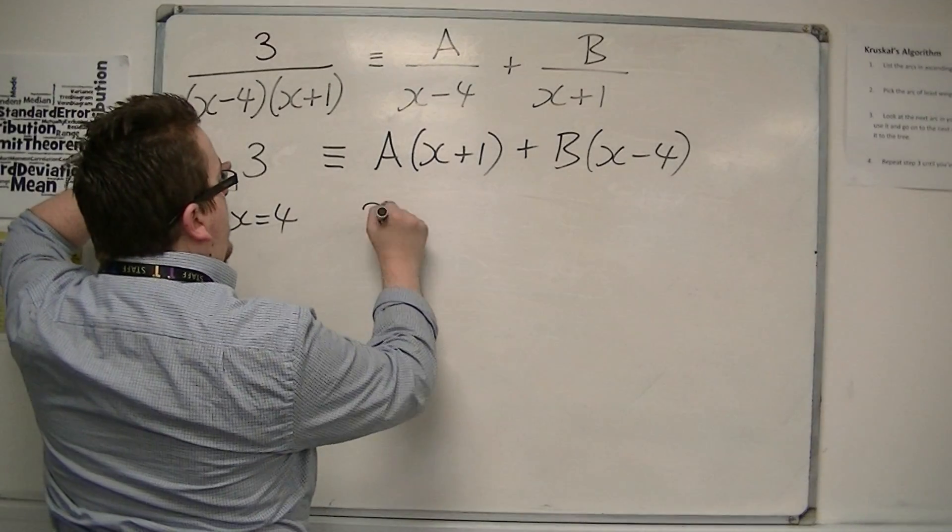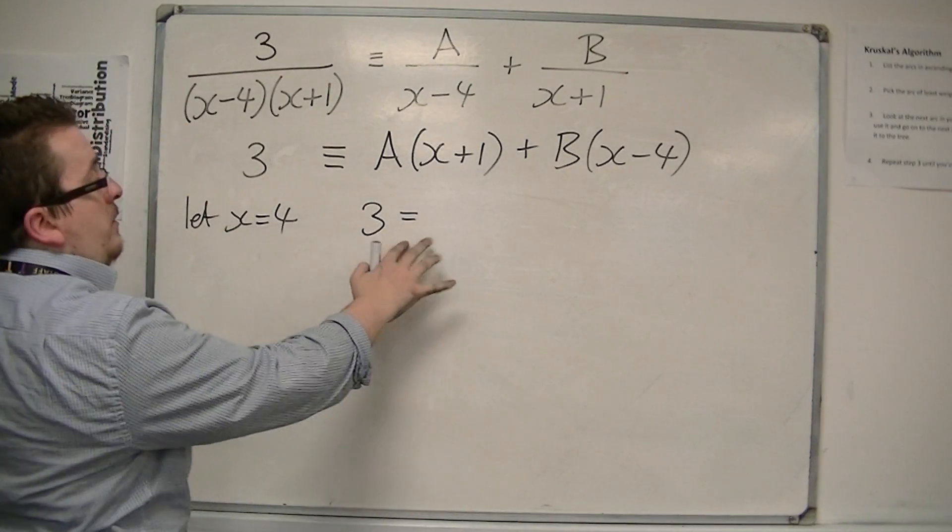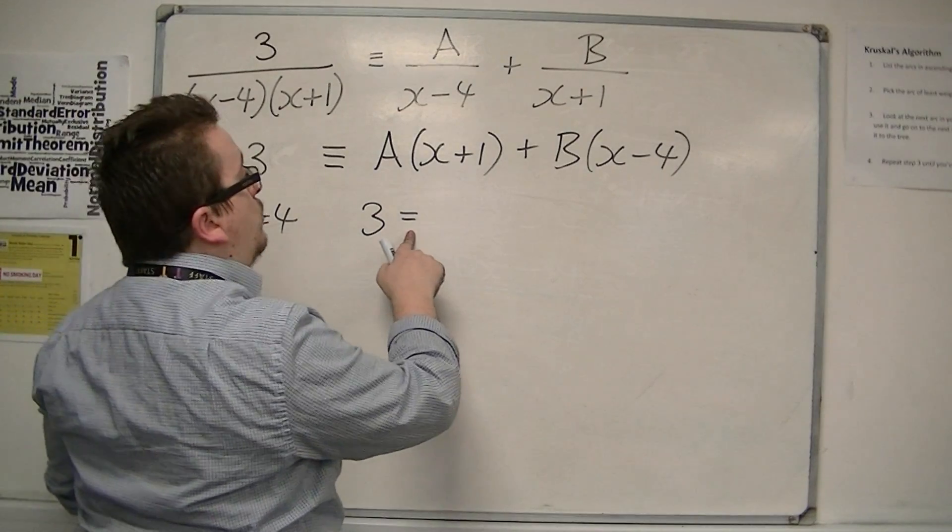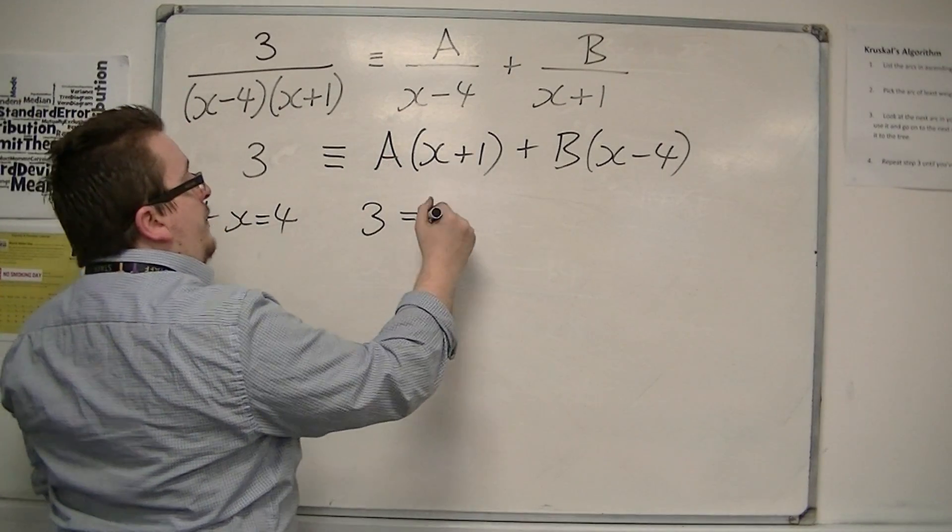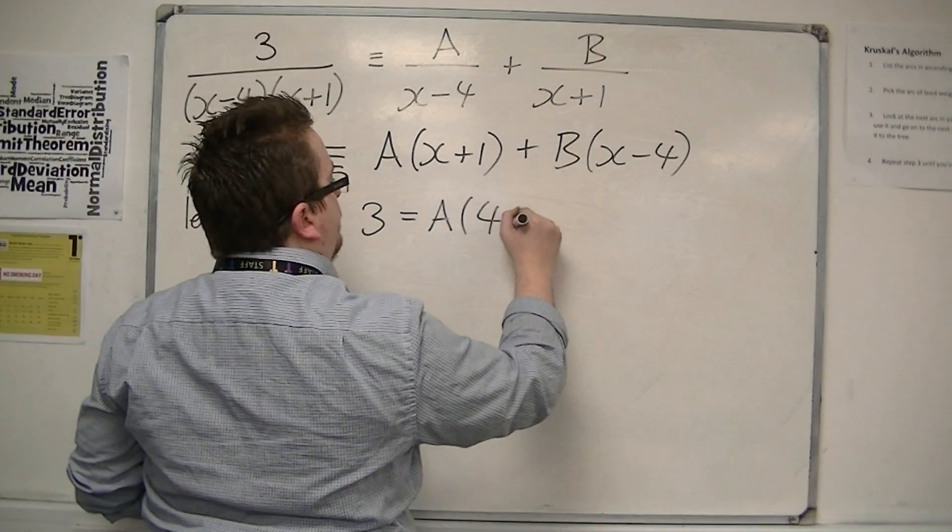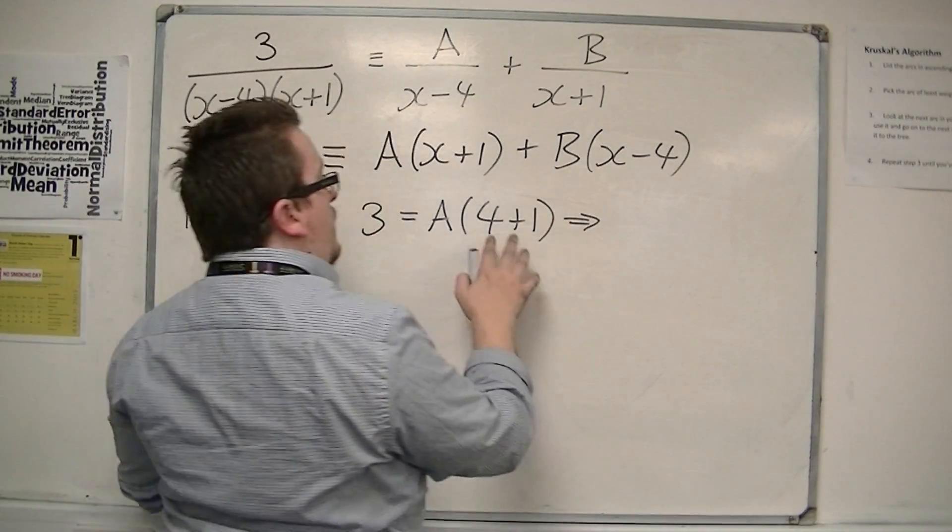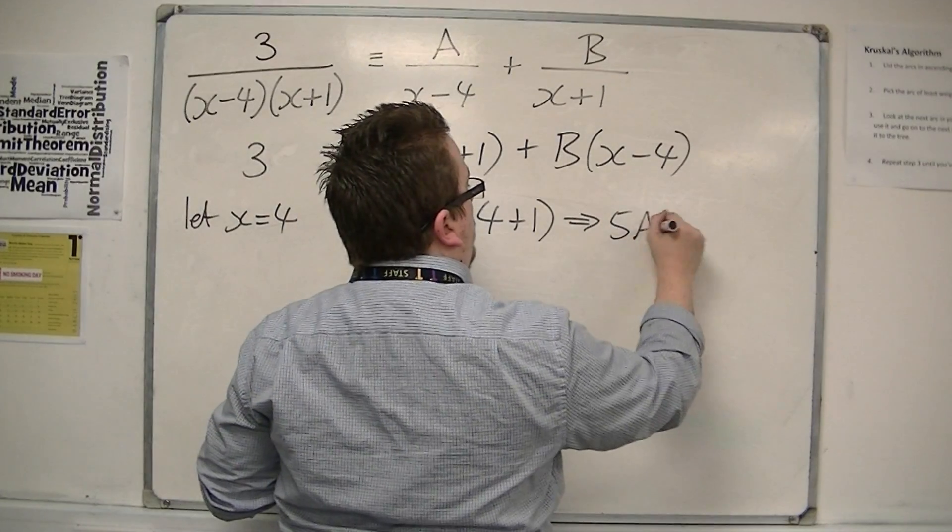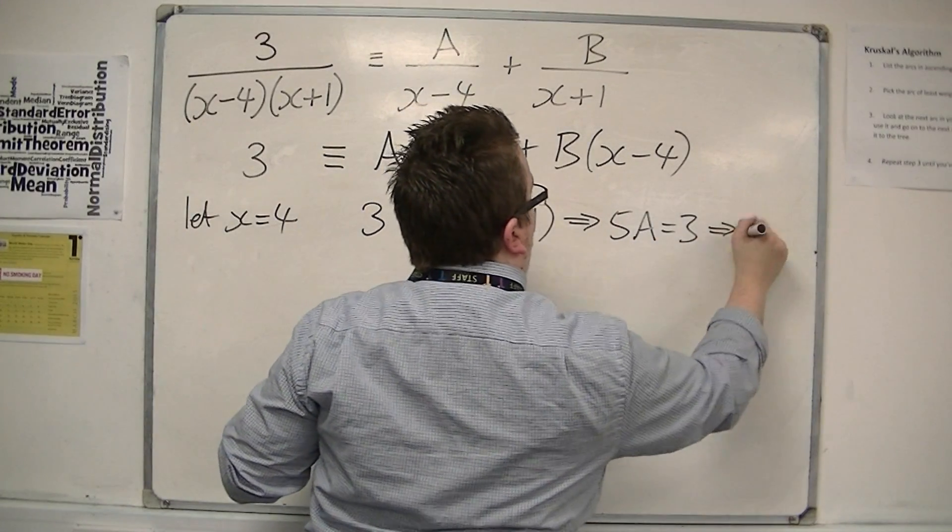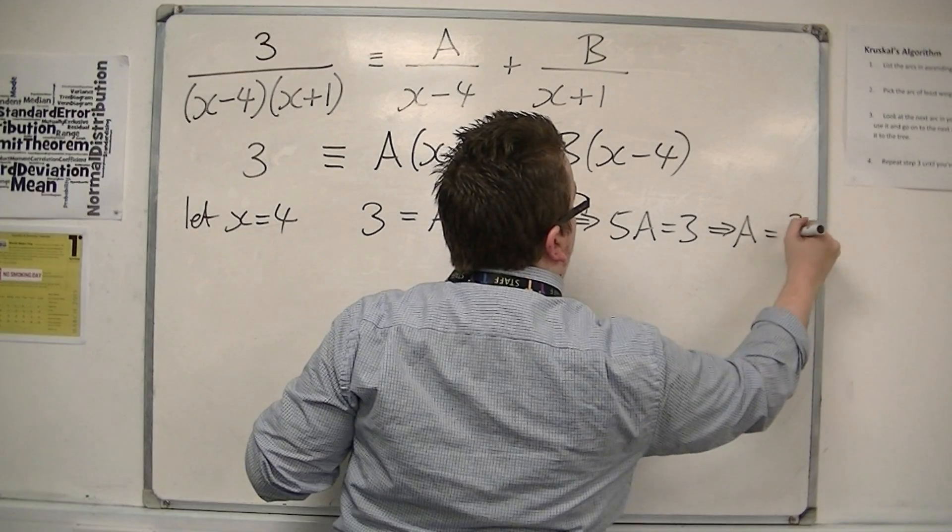Because I'm going to be left with 3 is equal now, not equivalent to, is equal to a lots of 4 plus 1. So, that means that we have 5a equals 3, so a is 3 fifths.